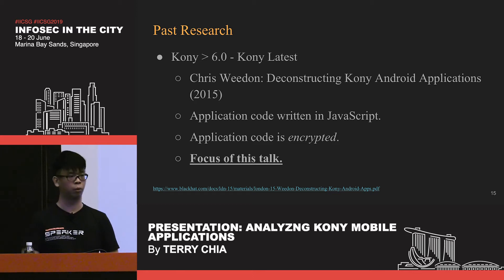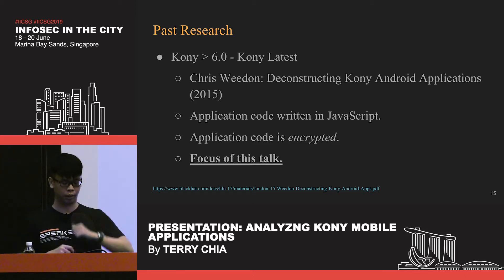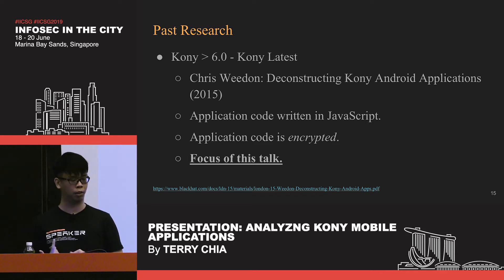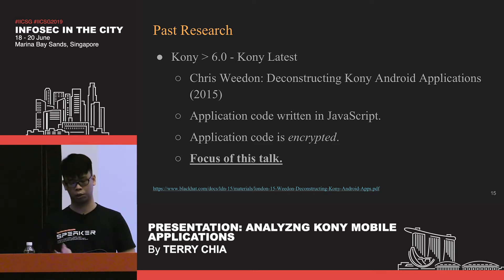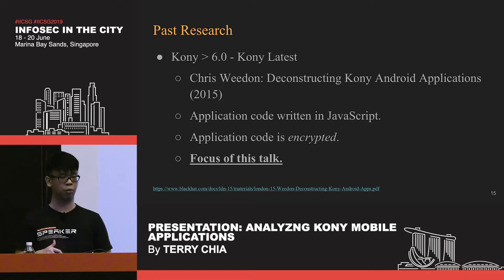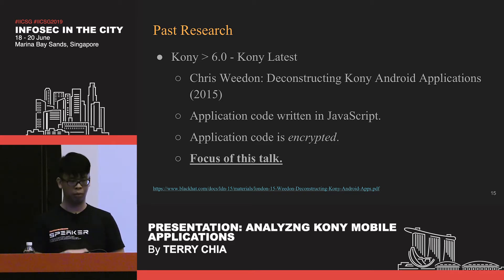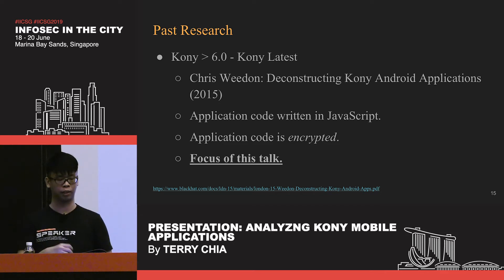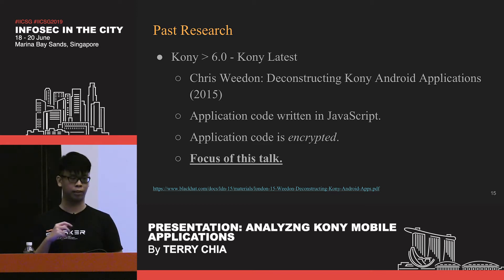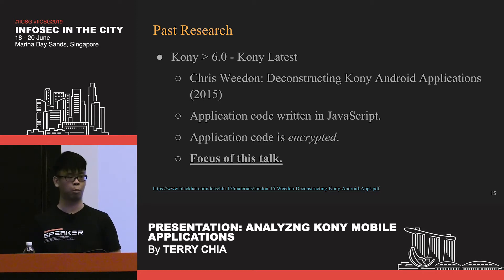For Kony version 6.0 onwards, there was a talk by Chris Whedon at Black Hat in 2015 titled Deconstructing Kony Android Applications. He found that for Kony version 6.0 and up, the application code is written in JavaScript and is stored encrypted in the IPA or APK file. He came up with tooling to extract that source code, but later versions of Kony made his techniques obsolete. So I extended his research and came up with new tools and techniques, which is the focus of today's talk.